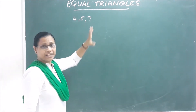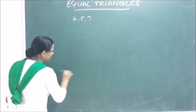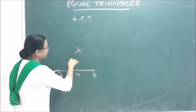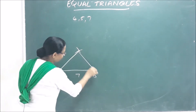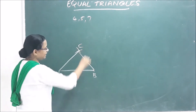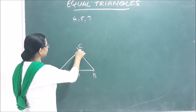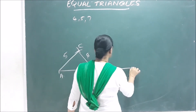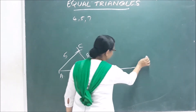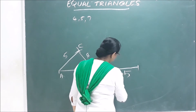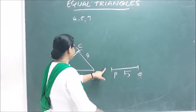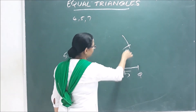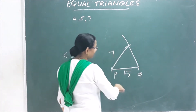So this is triangle A. AC is 5 cm, BC is 4 cm. The base is 5 cm. And this is triangle PQR. PQ is 7 cm, and the base is 4 cm.